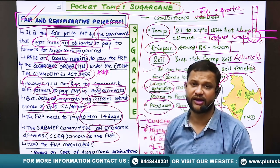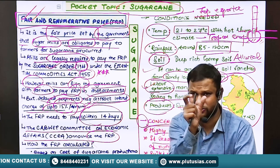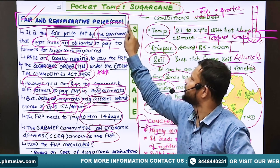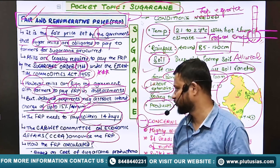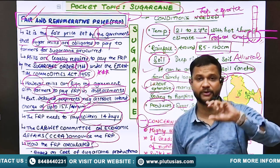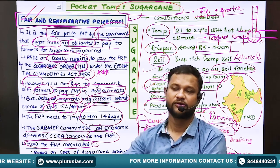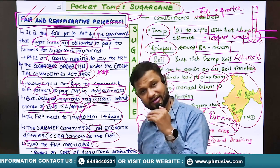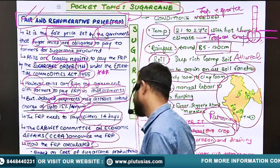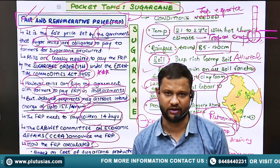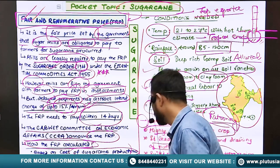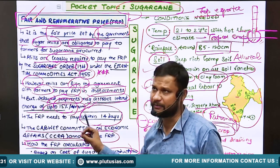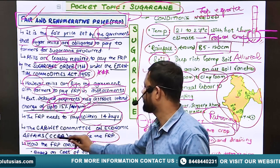The Cabinet Committee on Economic Affairs (CCEA), headed by the Prime Minister, is the final authority that decides the overall FRP. FRP is one of the most important tools to ensure farmers get a fair price for sugarcane — just as the MSP mechanism works for cereals, pulses, and oilseeds. The same concept applies to sugarcane through a very different mechanism. FRP calculation — similar to MSP calculation discussed in the UPSC playlist — is based on cost of sugarcane production, returns from alternative crops, and trends in agricultural commodity prices.